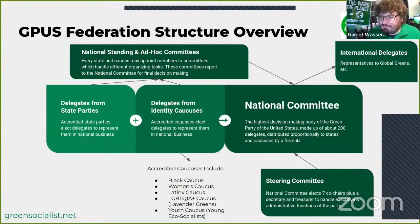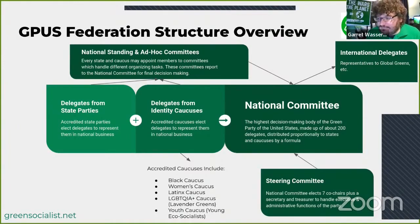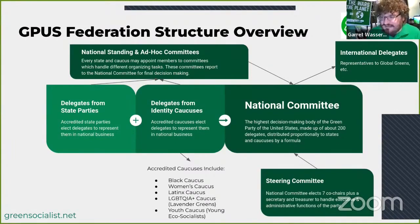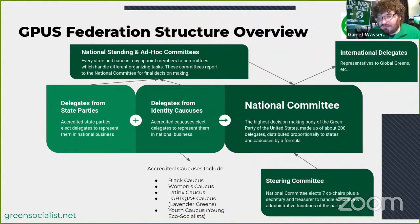While the national committee is the ultimate deciding body, the majority of the work actually happens in the standing committees shown at the top of the image. There are about 20 committees at the national level handling different things: a ballot access committee that helps coordinate ballot access across states, a media committee that handles press releases, and a merchandise committee — if you go to the Green Party website and buy a t-shirt, that's them.